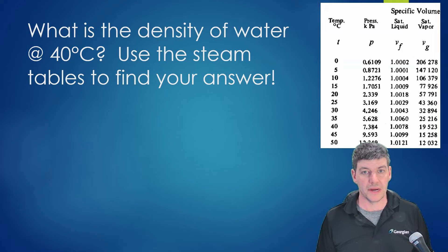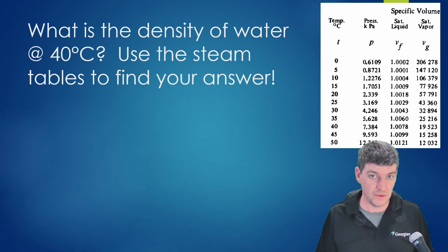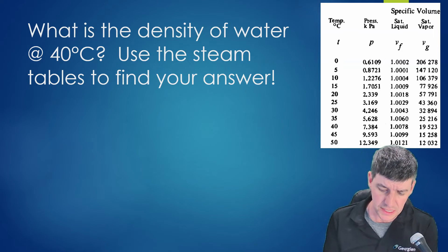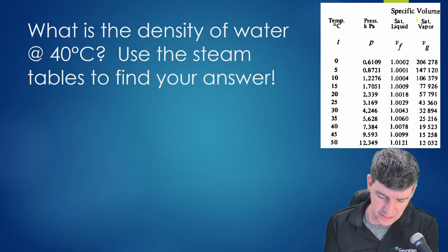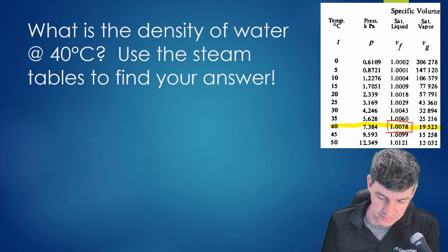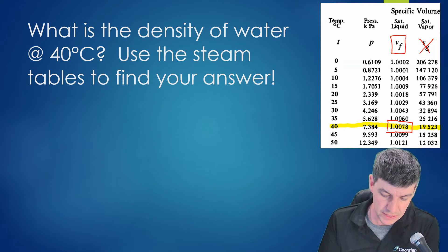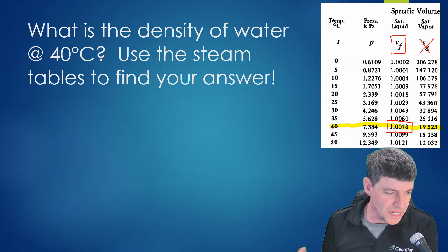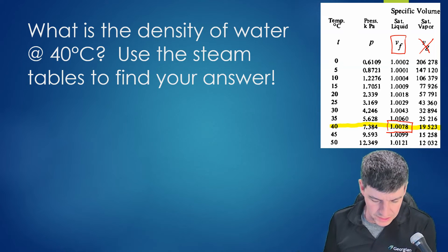Let's work together and calculate the density of water at 40 degrees Celsius. From the property tables, I look up the specific volume vf at 40°C. I want to be careful that I've got the saturated liquid column, not the saturated vapor. I know that density of water is roughly 1000 and a little bit less as it gets hotter, so that gives me a ballpark to know I'm on track.